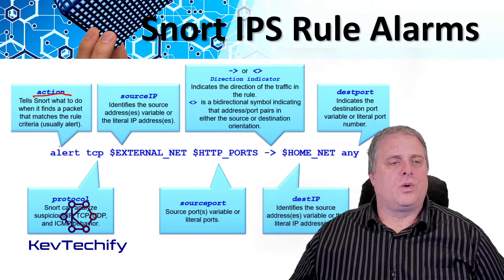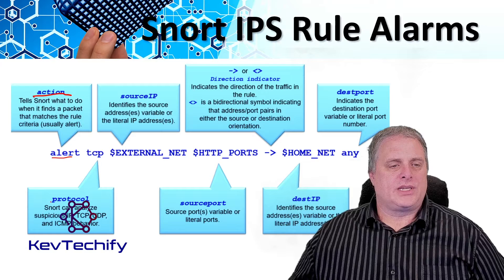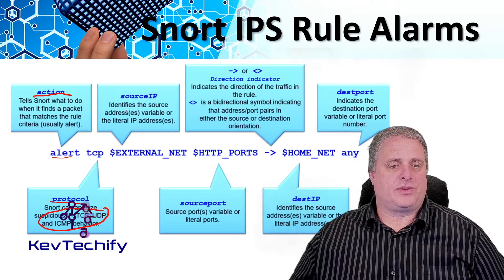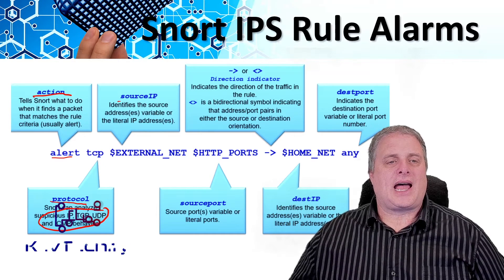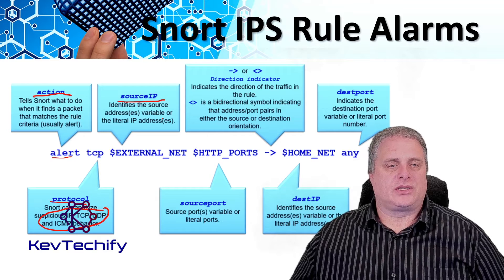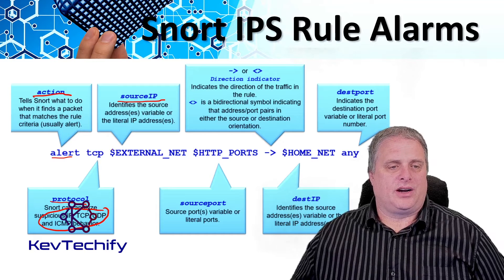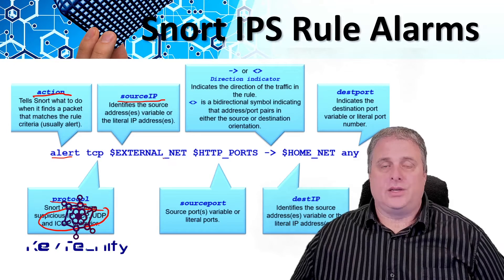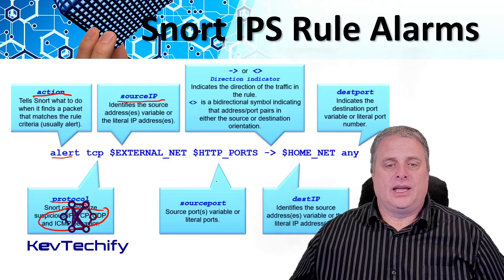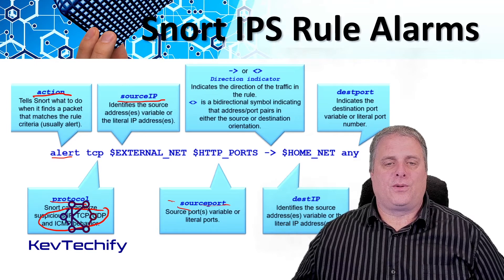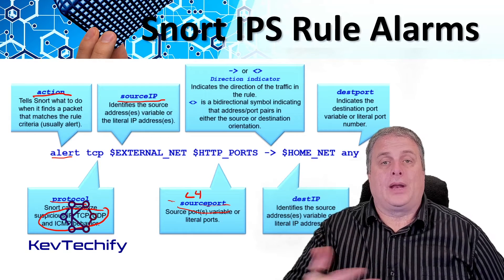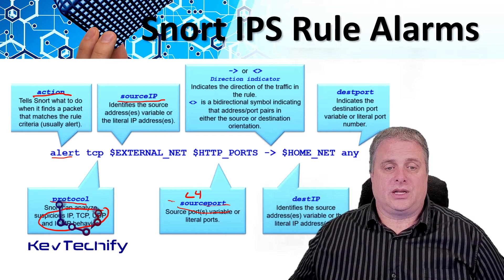So we create an alert, then specify what protocol we're using: IP, TCP, UDP, ICMP — all types of traffic. Next is the source IP address, which is a source address variable or the literal IP address. You can set it up as a variable starting with a dollar sign, or put in a literal address such as 192.168.10.10. Then you specify the source ports — these are Layer 4 source ports, where HTTP on port 80 would be an example.